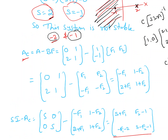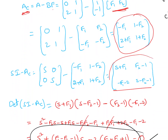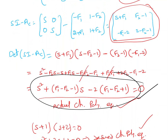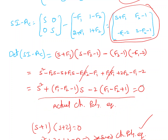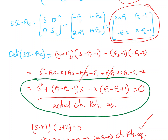Now we are designing the feedback. To find the feedback, A_c equals A minus bF, where F is the feedback we are designing. I found A minus bF equal to [-f1, 1-f2; 2+f1, 1+f2]. Then I found sI minus A_c, which is [s+f1, f2-1; -f1, s-f2-1]. I found the determinant of sI minus A_c — this is the actual characteristic polynomial equation derived from the given system.